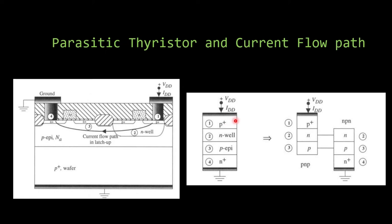By default this parasitic thyristor will not turn on because the middle junction is reverse biased. We don't want this to conduct at any time, because a thyristor is a latching device - once triggered, it will not go to the off state unless the current goes below the holding current. We can split this thyristor into PNP and NPN bipolar junction transistors. If the second junction is forward biased, the P-plus injects holes into the N-well, and if forward biased those holes will reach the N-plus connected to ground.